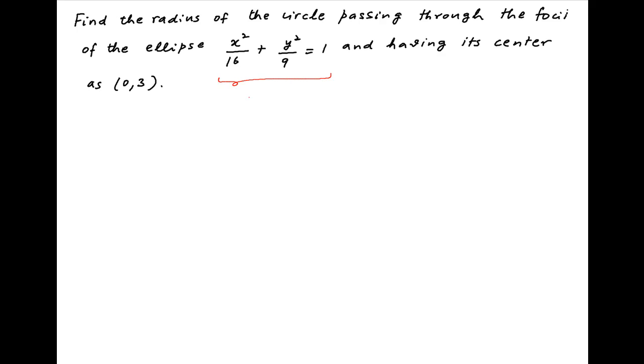From the equation of the ellipse, it is clear that the length of the semi-major axis a is equal to the root of 16 or 4, and the length of the semi-minor axis b is equal to the root of 9 or 3.